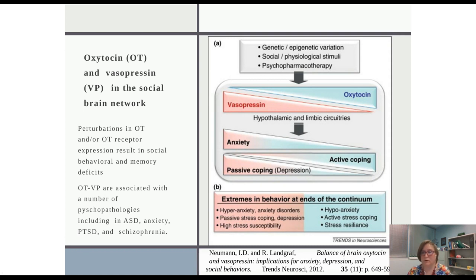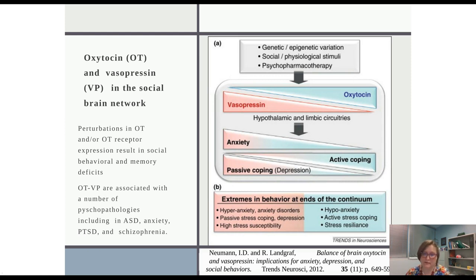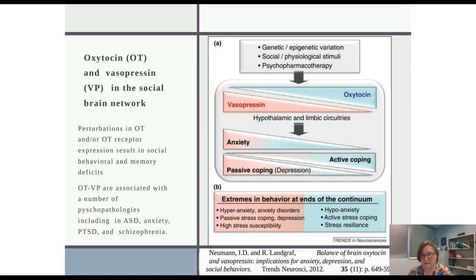There are a number of peripheral drugs currently in use for the oxytocin and vasopressin system. Oxytocin and vasopressin are expressed in hypothalamic and limbic circuitries, and they act essentially as a yin and yang for behaviors. Oxytocin is associated with anxiolytic behavior, active stress coping, and stress resilience, whereas vasopressin is associated with hyperanxiety or anxiogenic behaviors, anxiety disorders, passive stress coping, depression, and high stress susceptibility. Because these different peptides can act at each other's receptors, how they interact has a large effect on whether signaling tilts toward the oxytocin or vasopressin pathway.